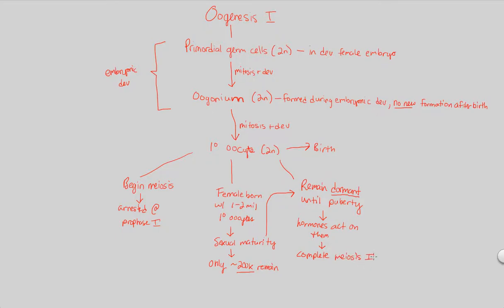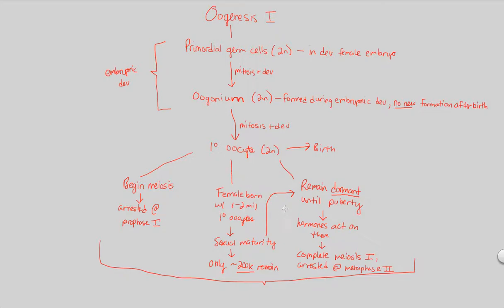This all happens at puberty. Upon completing meiosis 1, the primary oocyte will actually be arrested again — this time at metaphase 2. There is a specific reason for this second arrest, which we'll see later. Each primary oocyte is within a follicle structure, and this follicle will guide the rest of the oogenetic process — the development of a true, fertilization-ready egg cell.